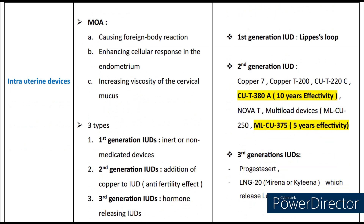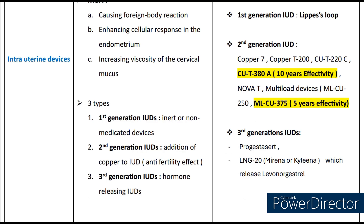Next are intrauterine contraceptive devices (IUCDs), which are inserted in the uterus to prevent pregnancy. The mechanism of action occurs through a foreign body reaction, by enhancing cellular response in the endometrium, or by increasing viscosity of the cervical mucus. There are three generations of IUCDs. First generation are non-medicated devices. Second generation have copper added for anti-fertility effect — examples include T380A and Cu375, where Cu375 has 5 years' effectivity and Copper T380A has 10 years' effectivity. Third generation IUDs are hormone-releasing intrauterine devices — examples include Progesta-set and LNG20, also called Mirena or Chilena.